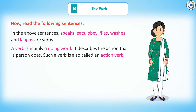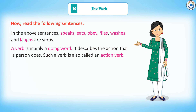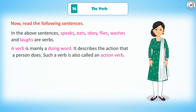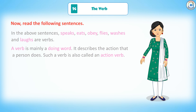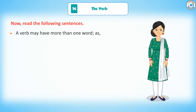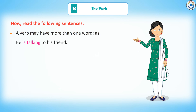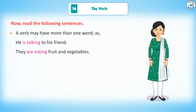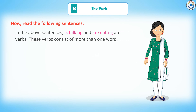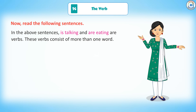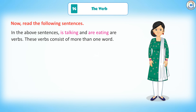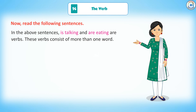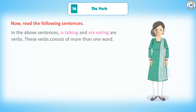A verb is mainly a doing word. It describes the action that a person does. Such a verb is also called an action verb. A verb may have more than one word, as in: He is talking to his friend. They are eating fruit and vegetables. In the above sentences, is talking and are eating are verbs. These verbs consist of more than one word.